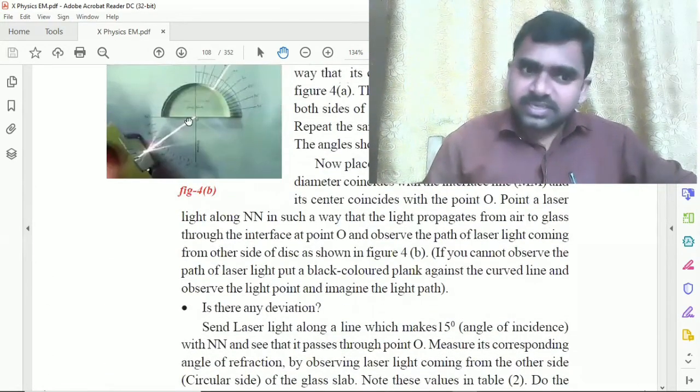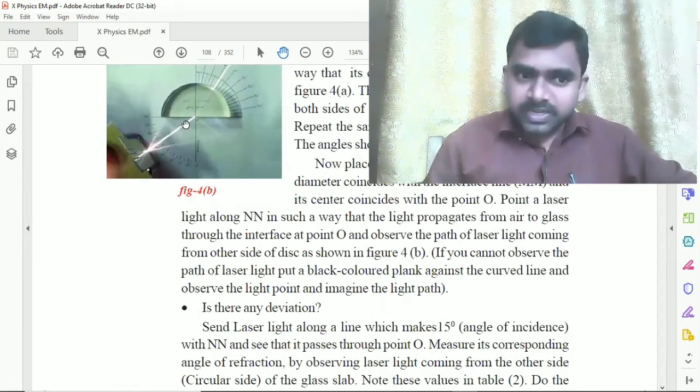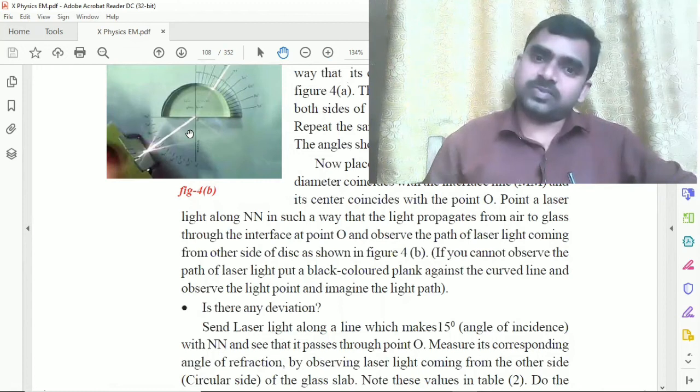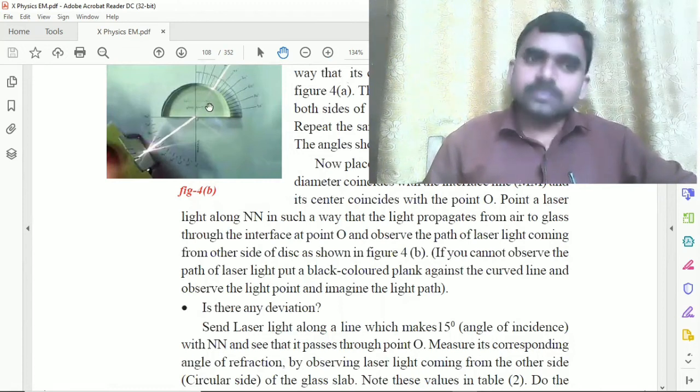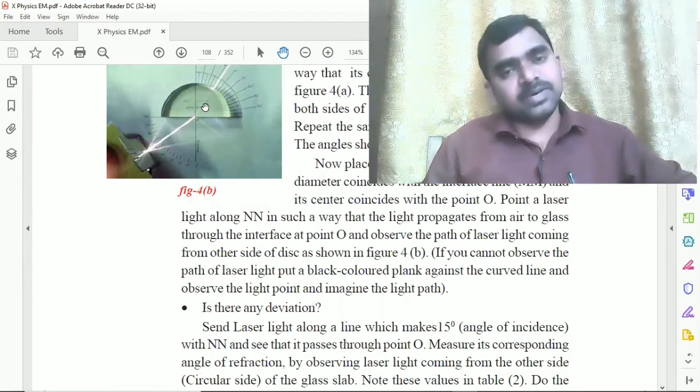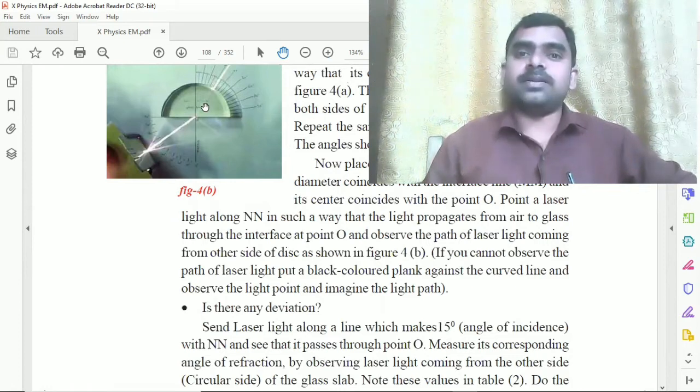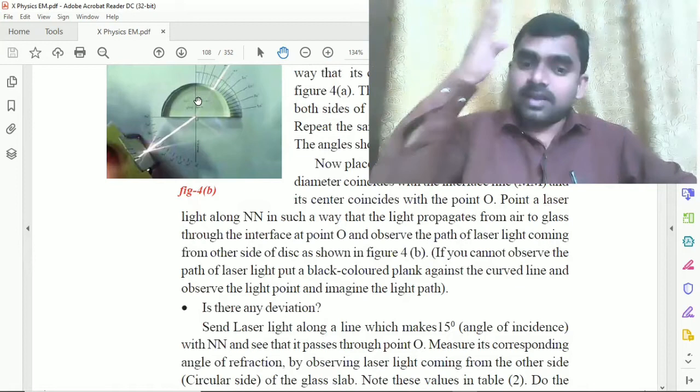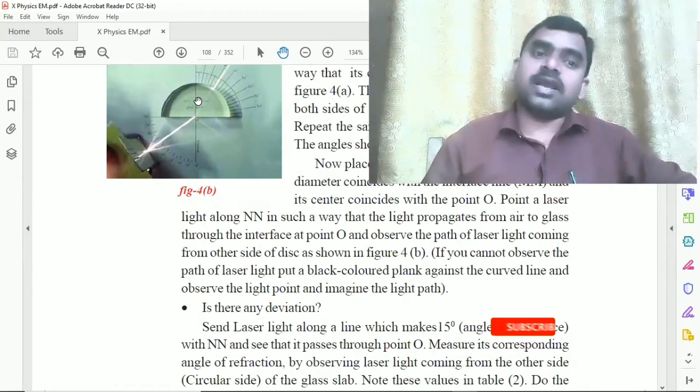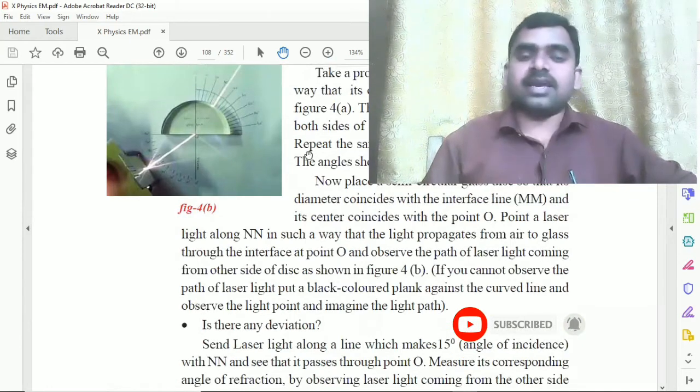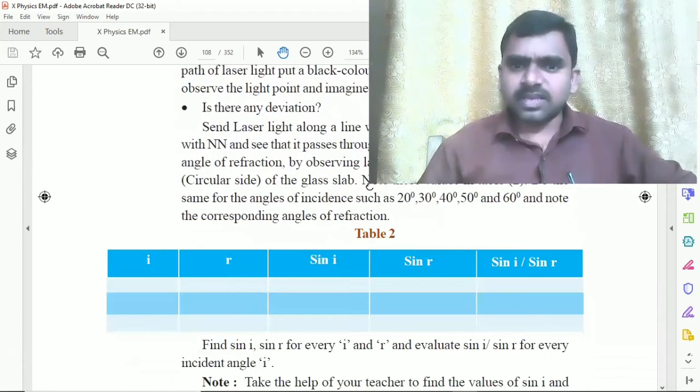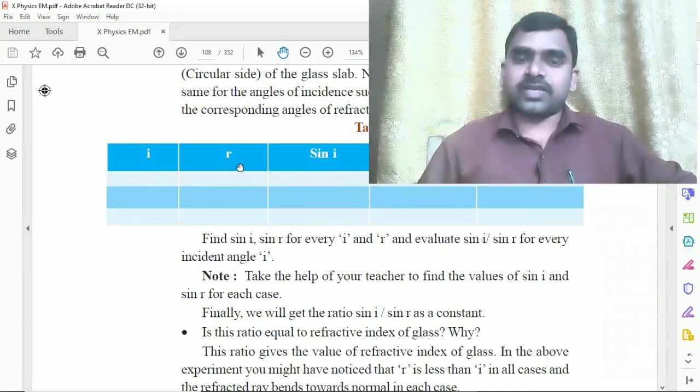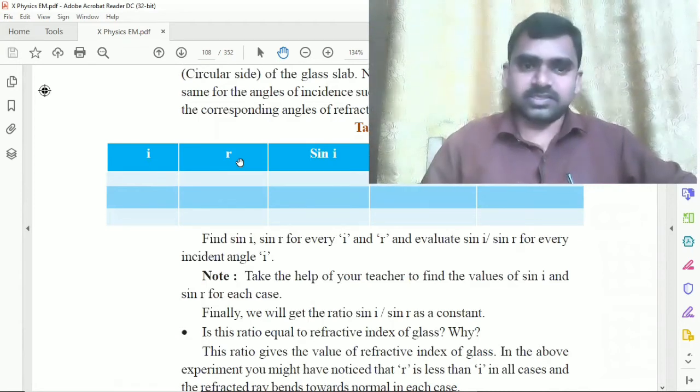This is the incident ray at 15 degrees. When light travels from air to glass, one medium to another medium, according to Fermat's principle, light will bend. This is the refraction, and this is the refracted ray. The refracted ray and normal form the angle of refraction. Sign values need to be noted.